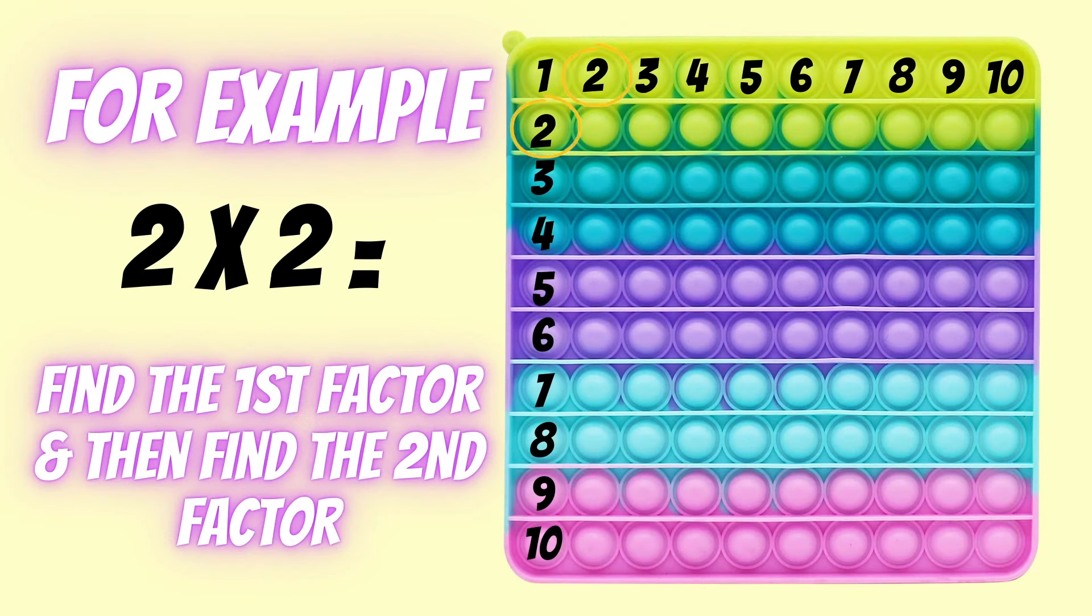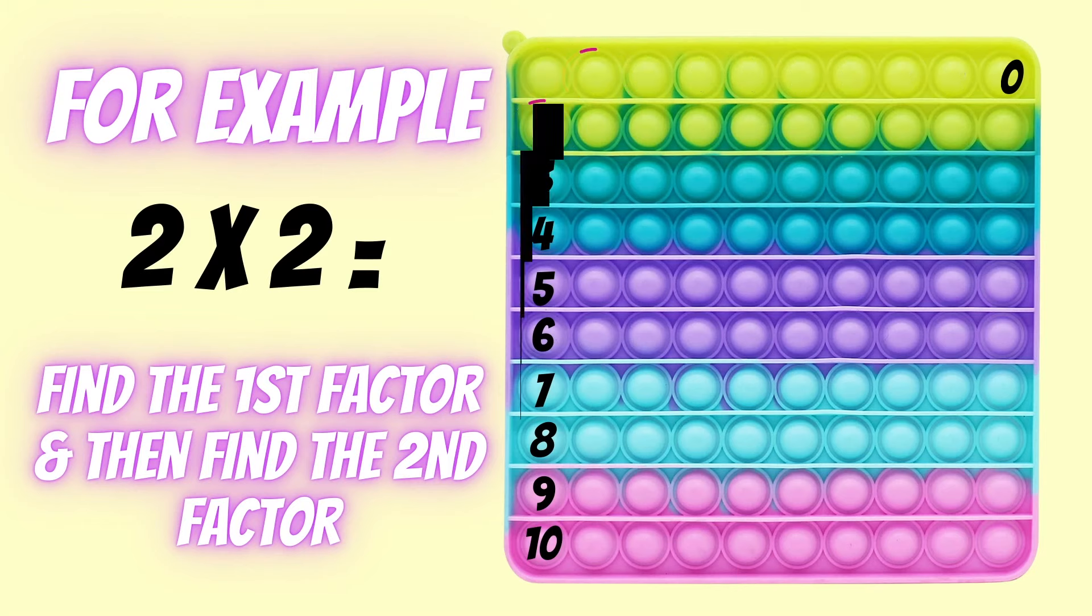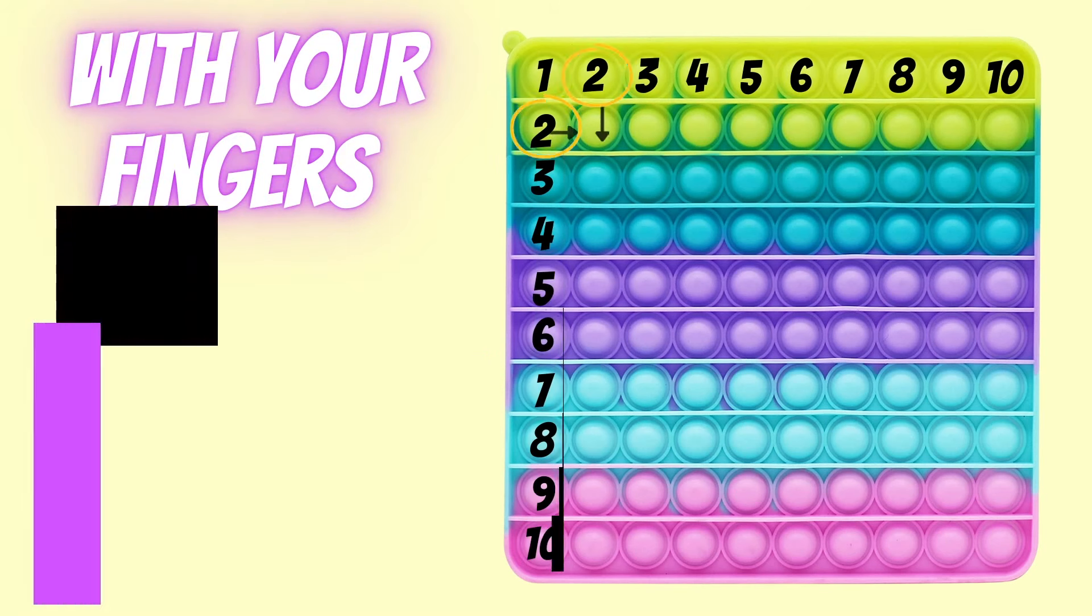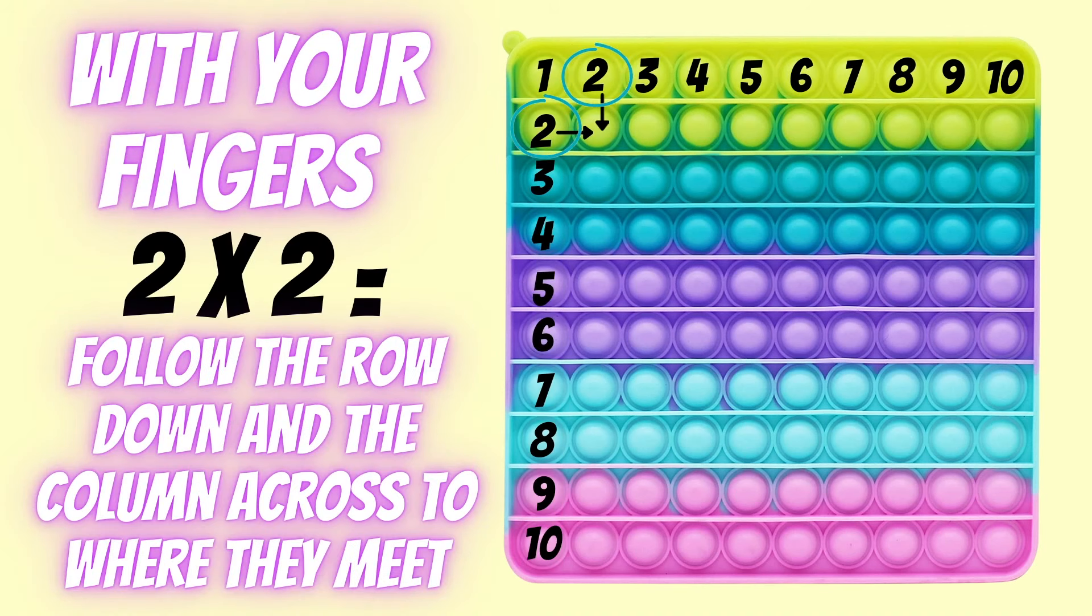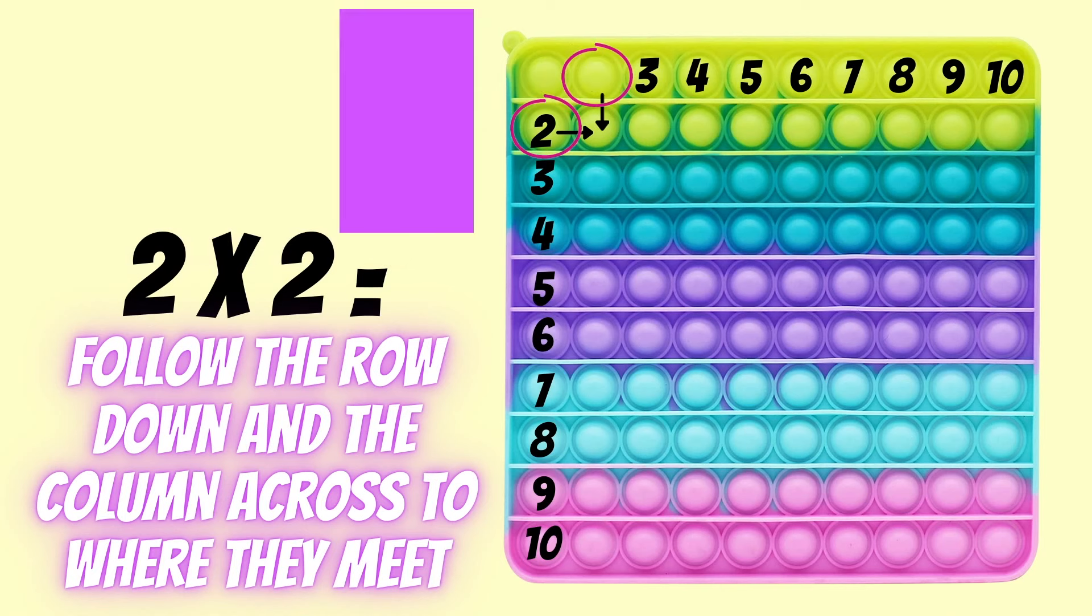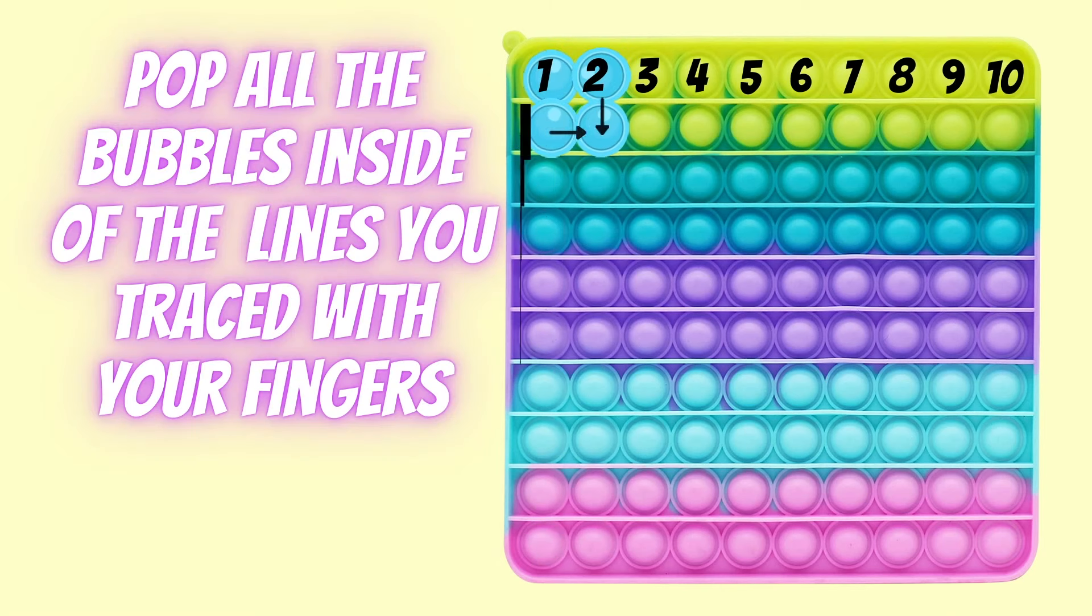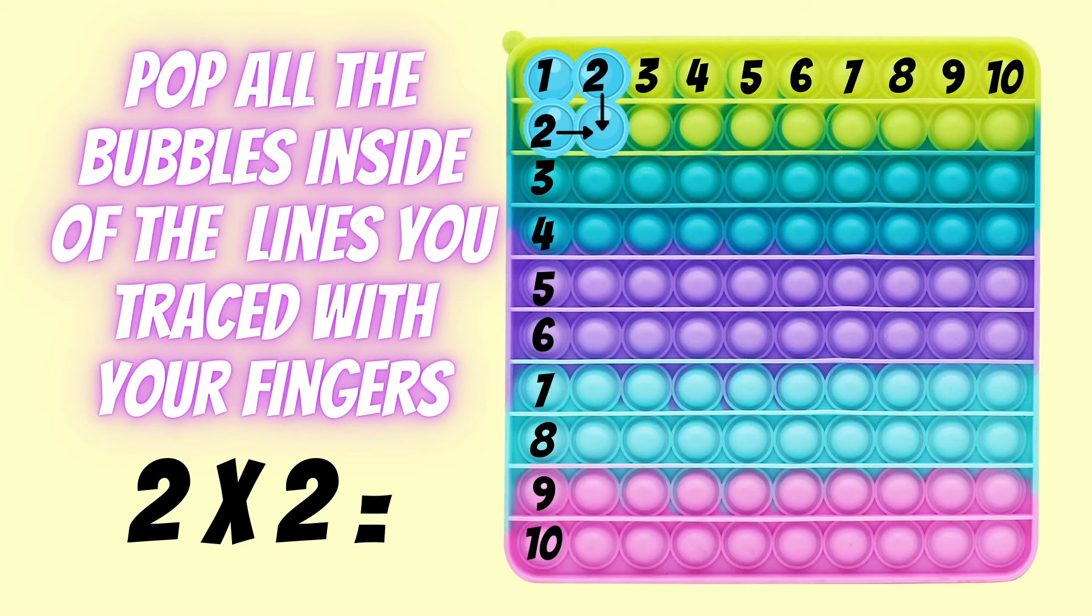For example, 2 times 2. You find the first factor in the top row and the second factor in the column. With your fingers, follow the row down and the column across to where they meet. Everything inside of those lines you just traced with your fingers, you're going to pop all of those bubbles.